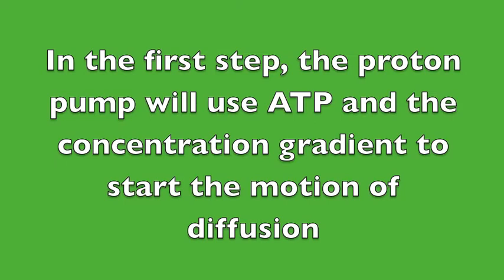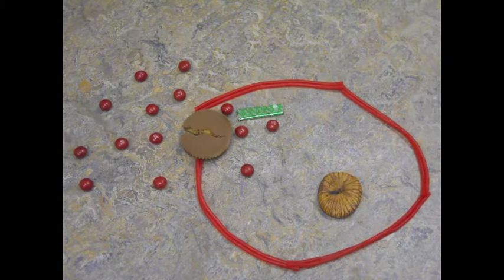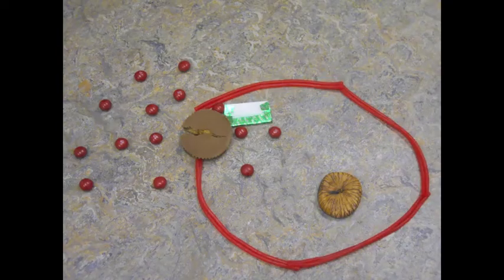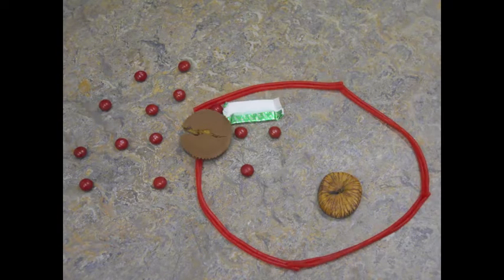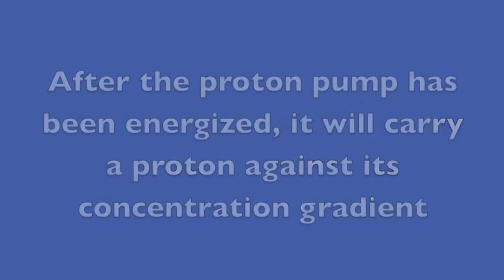Let's do this again, but slow it down this time. In the first step, the proton pump will use ATP and the concentration gradient to start the motion of diffusion. ATP now must release its stored energy to allow protons to get across the membrane. After the proton pump has been energized, it will carry a proton against its concentration gradient.